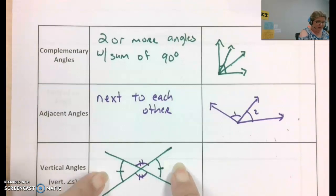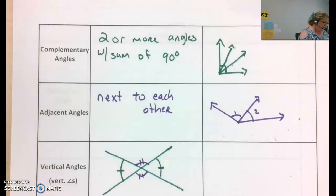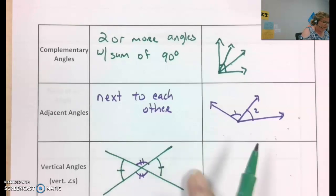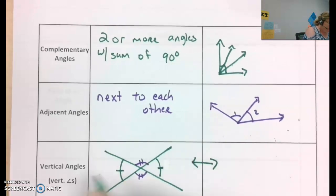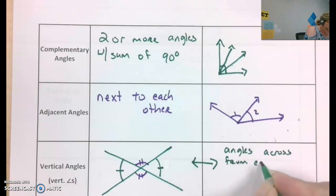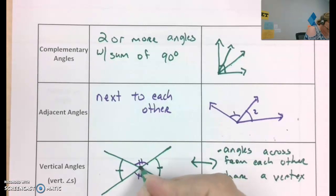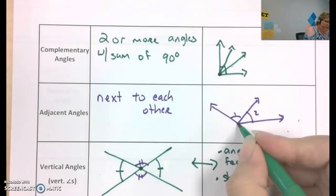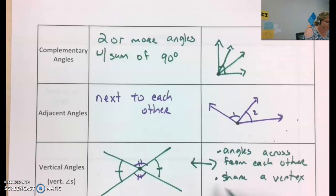So these are equal to each other, and these are equal to each other. So I should have put that over here. I'll just reverse those. Vertical angles are angles that are crossed from each other. They share a vertex, which is this point where the angles, the rays meet to form an angle. They share a vertex, and they are equal to each other.